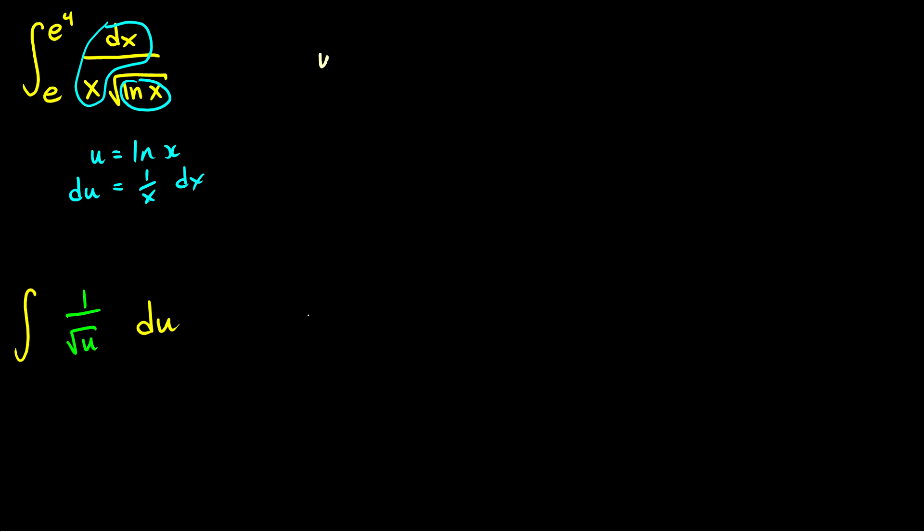So now let's do our limits of integration. If x is equal to e, then u would be ln of e, which is just 1. So our lower limit is going to be 1. And if x is equal to e to the 4, then u would equal ln e to the 4, which is just 4. So this is now the definite integral from 1 to 4 of 1 over root u du.